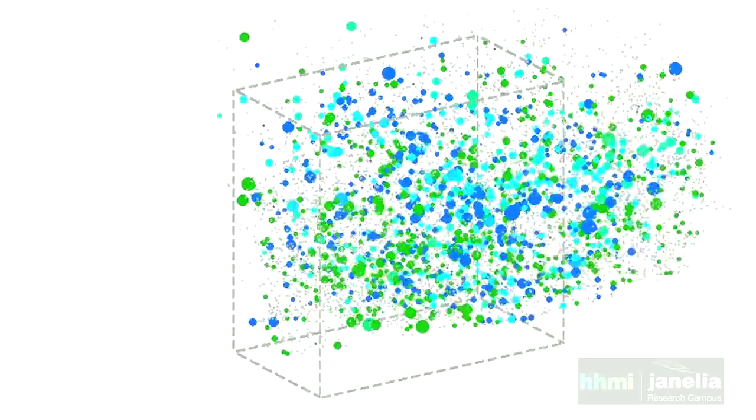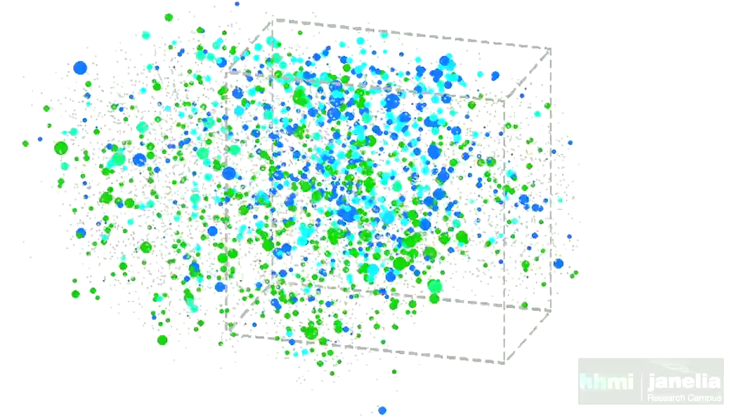The dotted gray line indicates the position of the spared whisker column, that is, the place where input from the one whisker that the mouse has left is arriving at. As you can see, there are far more blue dots inside of this dotted line than outside. This is logical because input from that whisker is, of course, arriving at that particular column.